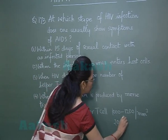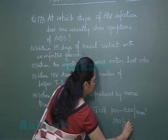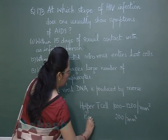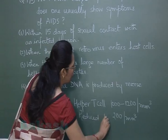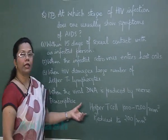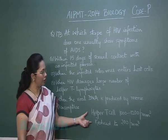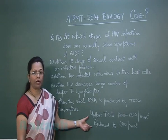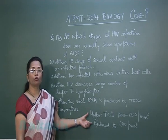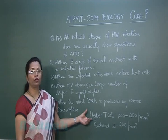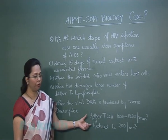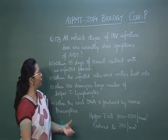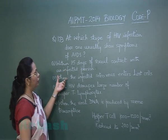When this count reduces to 200 per millimeter cube, the immune system is weakened. The time period in which this reduction takes place could be 5 to 10 years, so there is a long latent period.